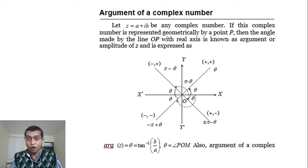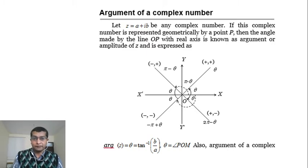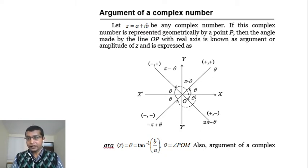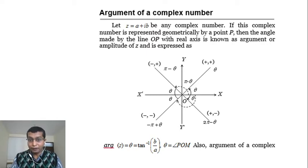Today we discuss the argument of a complex number. Last class we discussed what is meant by a complex number, basic terminologies, and solved examples based on that. Now we will define what is the argument of a complex number. Let z equal to a plus ib be any complex number. If this complex number is represented geometrically by a point P, then the angle made by line OP with the real axis is known as the argument or amplitude of z.